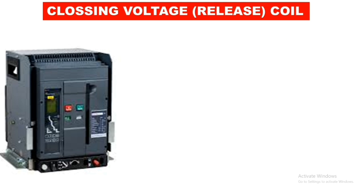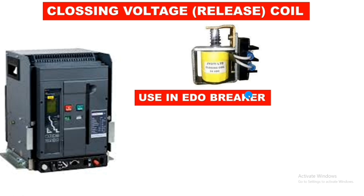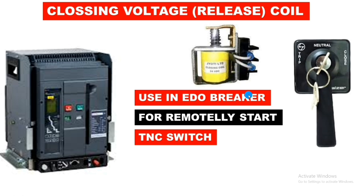The second coil is the closing release coil, or closing voltage coil. You can see the structure of this closing release coil here. This closing release coil is only found in EDO breakers. The main function of the closing release coil is to remotely start the air circuit breaker. If you want to start your air circuit breaker by providing a command from a PLC or a TNC switch, you can do so remotely from any place.